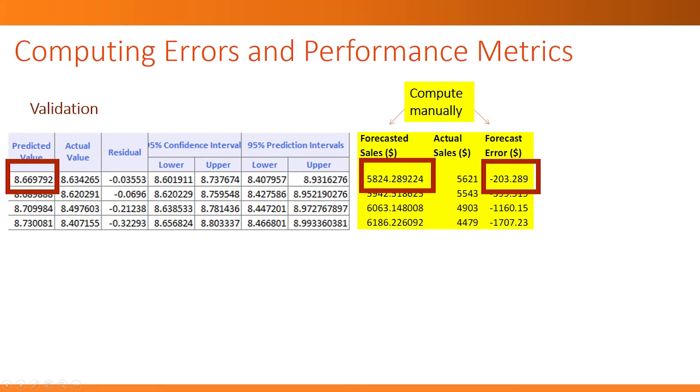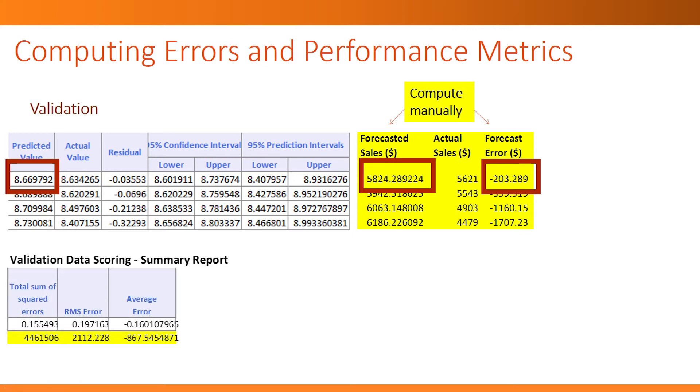Next, we can compute the performance metrics based on the manually computed forecast errors. Notice how XLMiner's reported metrics are not what we want. So instead, we computed these metrics manually in yellow.